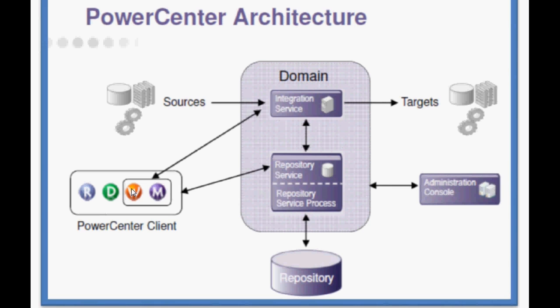During installation, after providing the username and password, Informatica creates around 200 system tables — called metadata tables — based on which all other services will be created. These tables are for internal Informatica use only. There are two services: the Repository Service and the Integration Service.